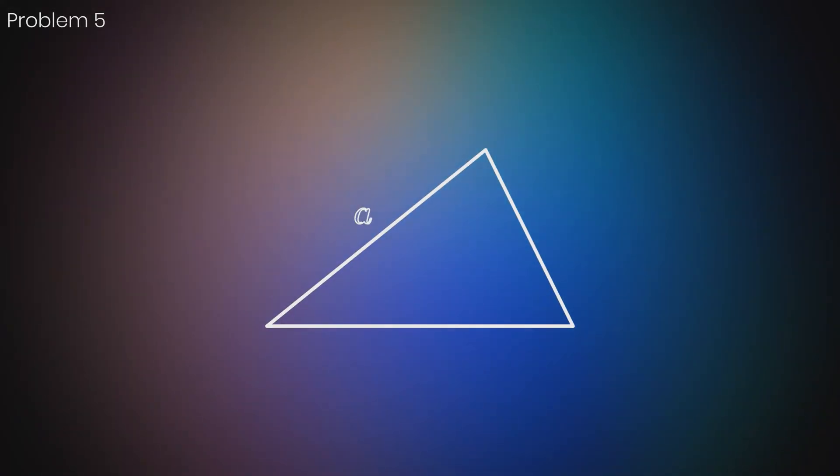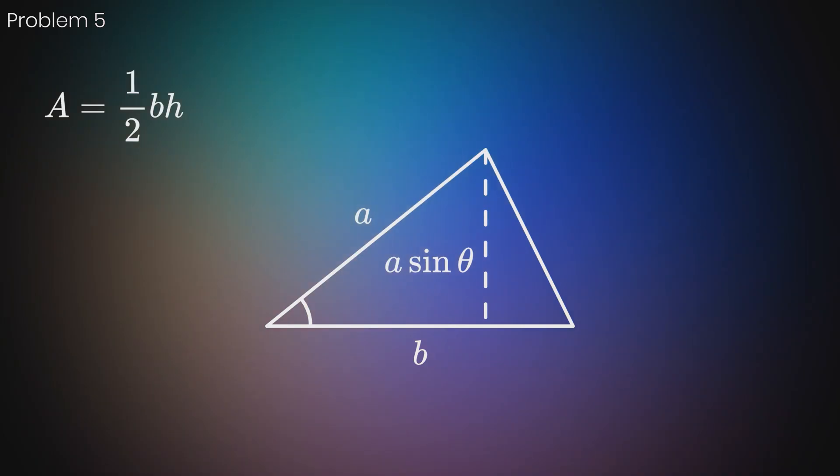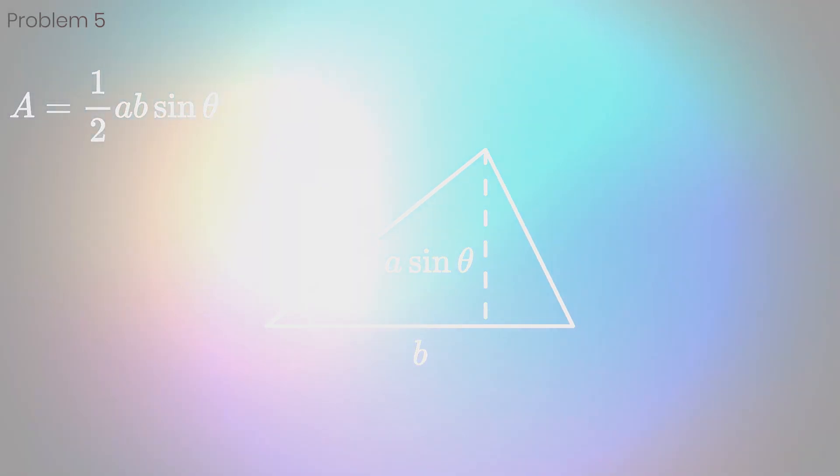The area of a triangle with two known sides and an angle between can be found by treating one of the sides as the hypotenuse of a right triangle. The perpendicular height of the triangle is the hypotenuse times the sine of the angle. Following the formula for the area of a triangle, we get area equals half of a times b times sine of theta.